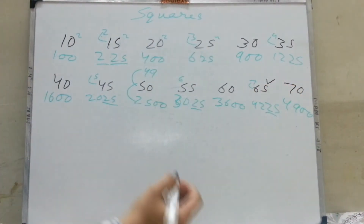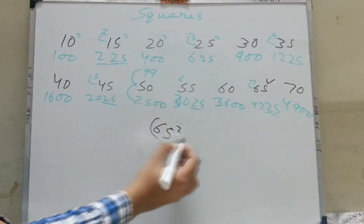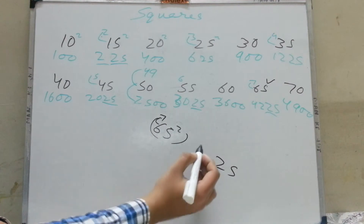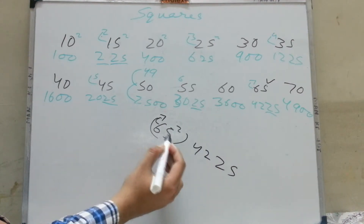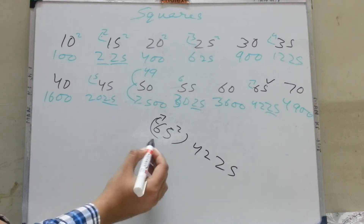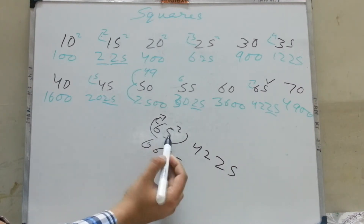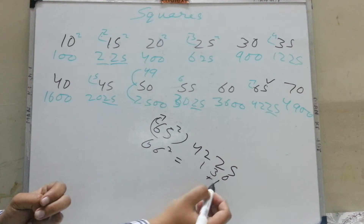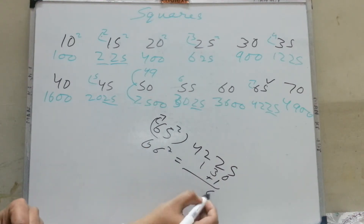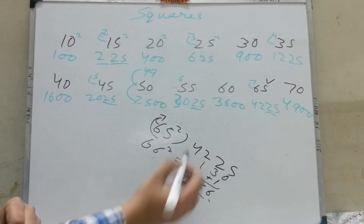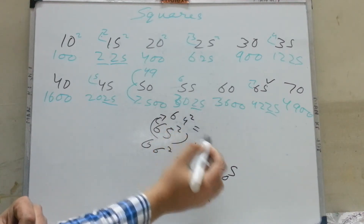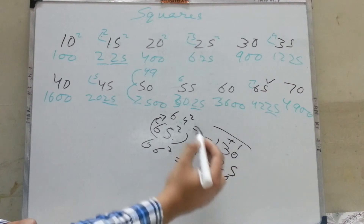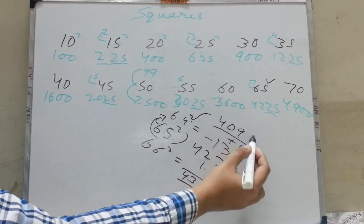Since you know the square of 65 — last two digits are 25 and you multiply 7 with 6, answer is 42, so 65 squared is 4225 — the square of 66 will be: add 65 twice, meaning add 130, plus 1. That gives the answer for 66 squared as 4356. For the square of 64, subtract 130 from 4225 plus 1, and you get 4096.